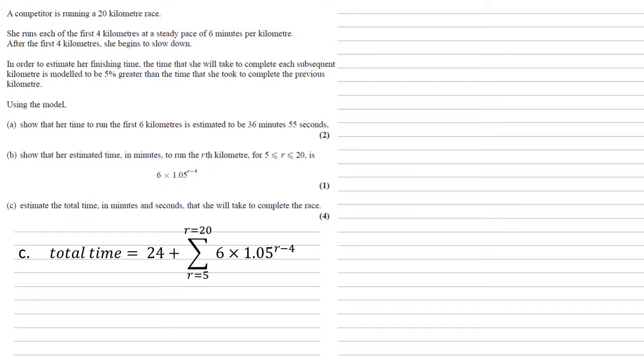As this is a geometric sequence, we need to know the first term. So the first term would be 6 × 1.05, we've got that by putting r = 5 into the expression r - 4 to give us a power of one. So the first term is 6.3.